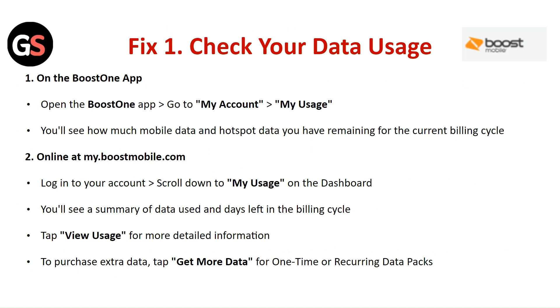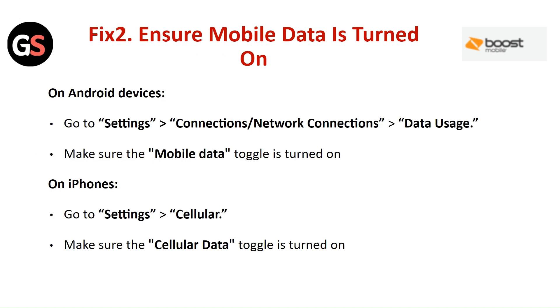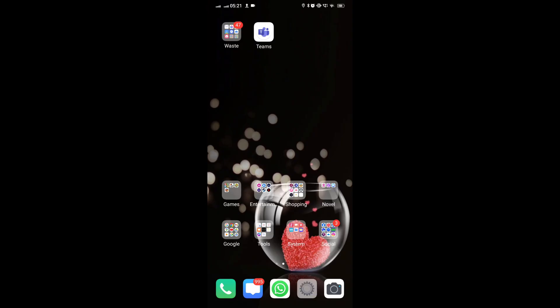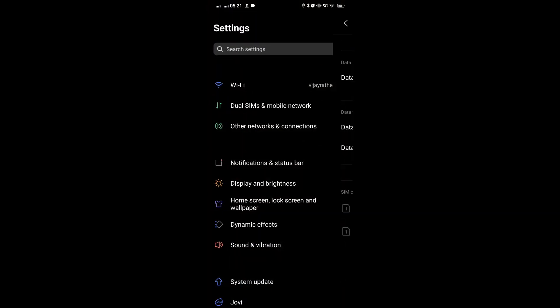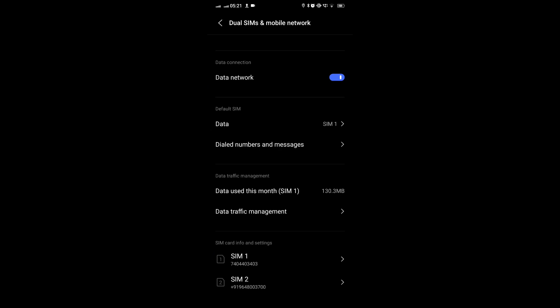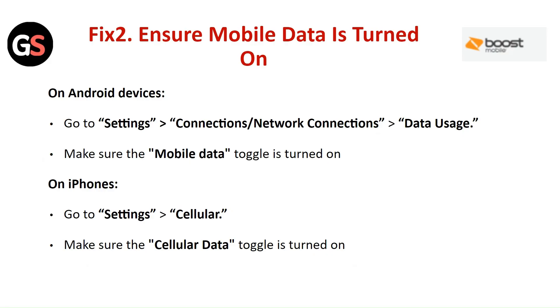To purchase extra data, tap on Get More Data for one-time or recurring data packs. Fix Two: Ensure mobile data is turned on. On an Android device, go to Settings, then Network and Connections. Make sure the cellular data toggle is turned on.